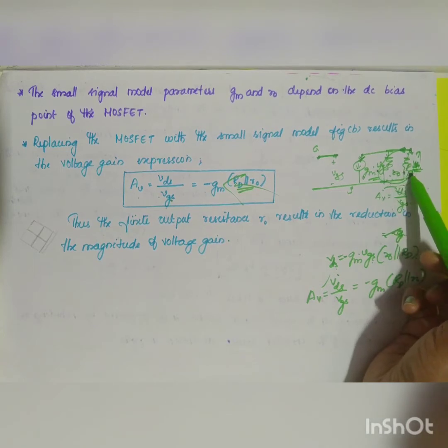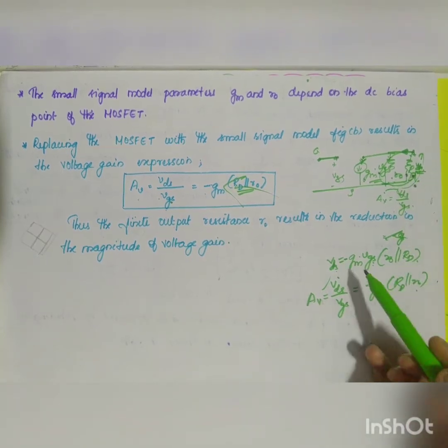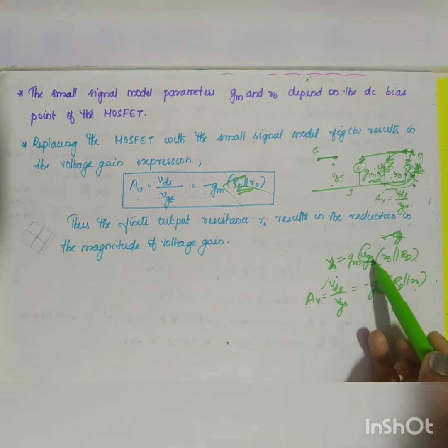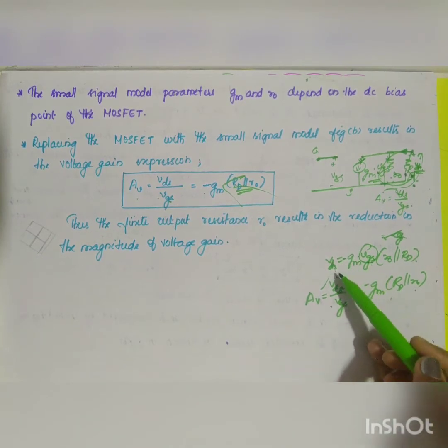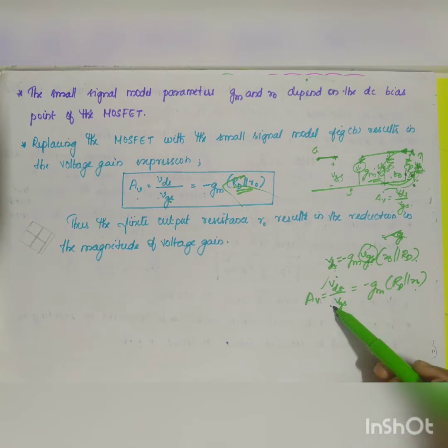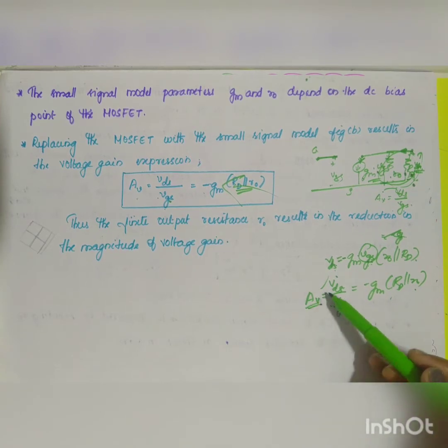What will be your resistance? R naught parallel to RD, total resistance. That is what is written here. Now you know that VGS is nothing but input voltage. If I bring it to down, what you will be getting? VDS divided by VGS, which is nothing but your gain.